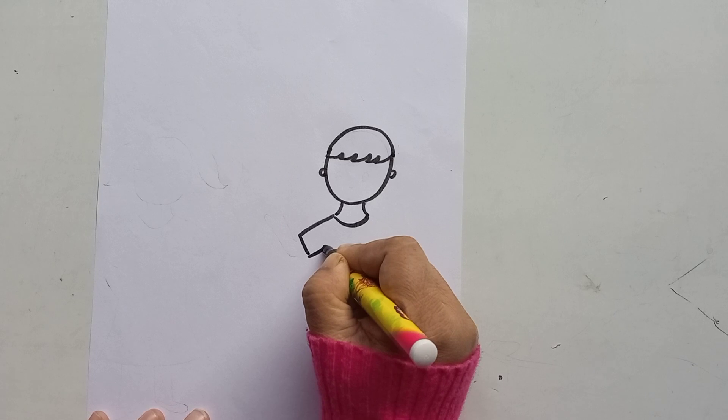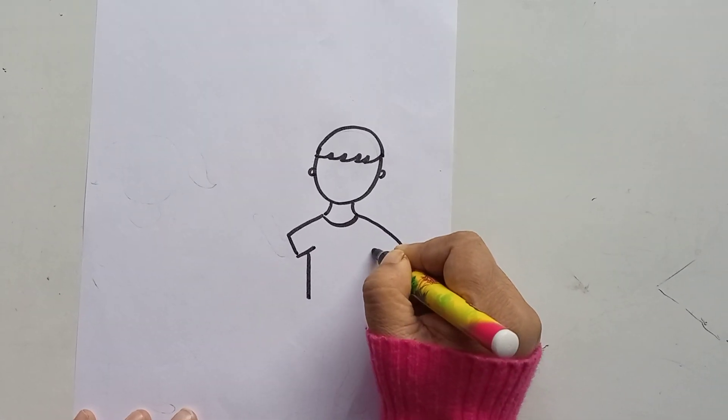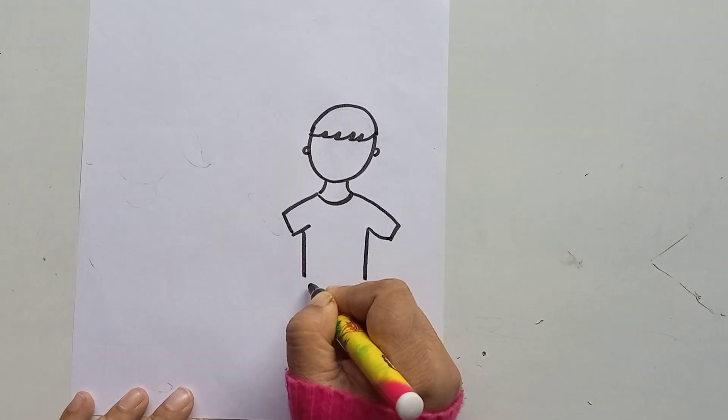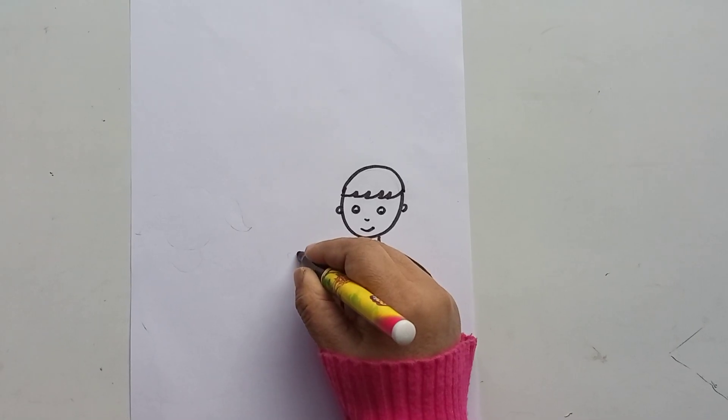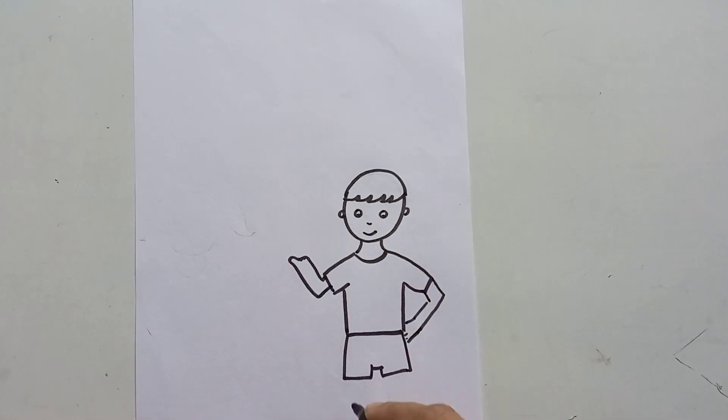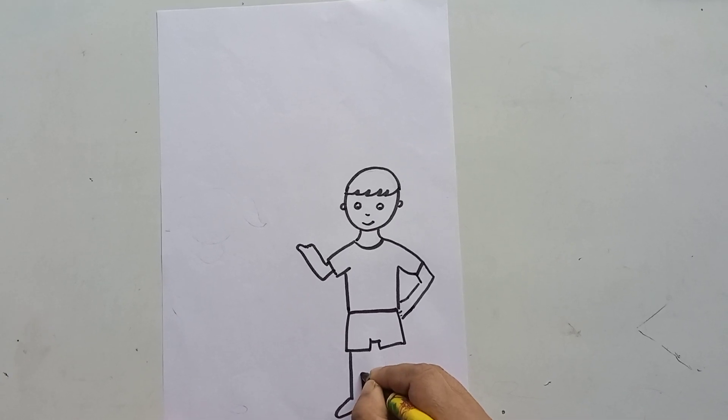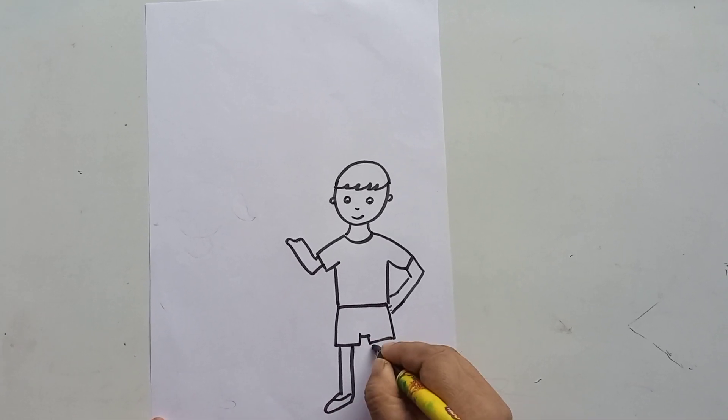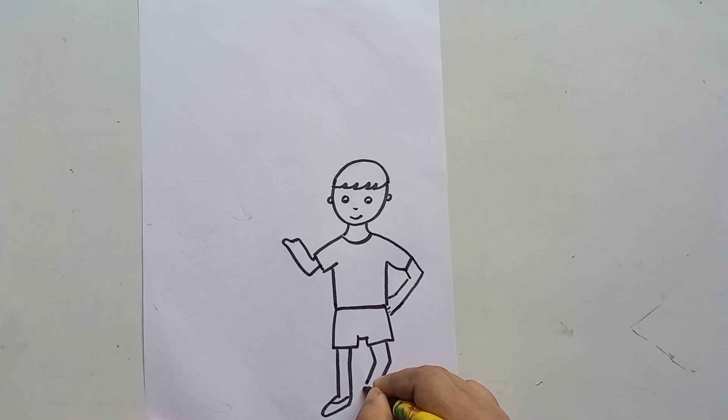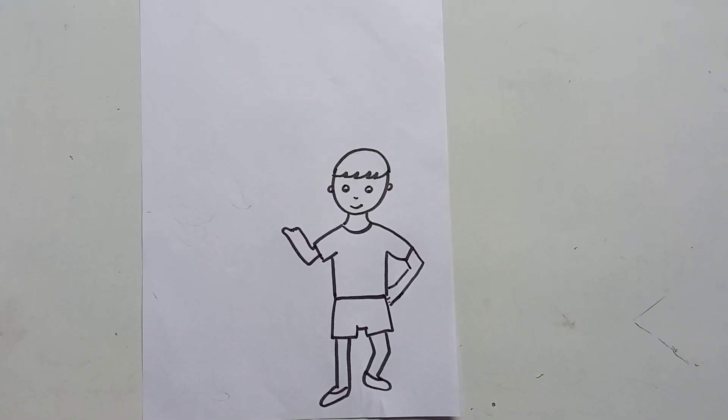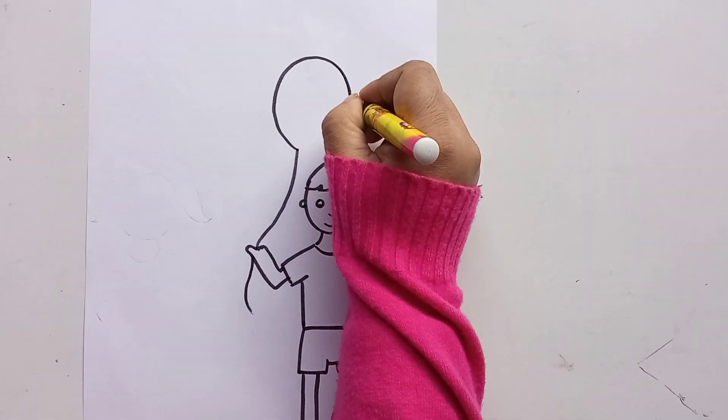Like this, we will draw a child boy. Now, we can make the boy like this. This boy child is holding a balloon.